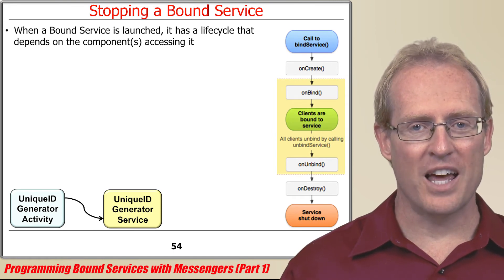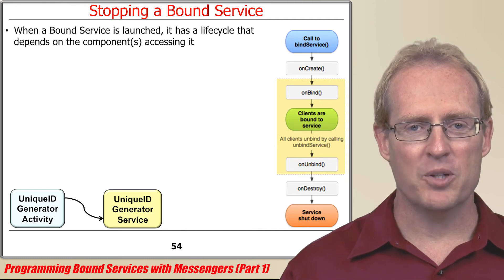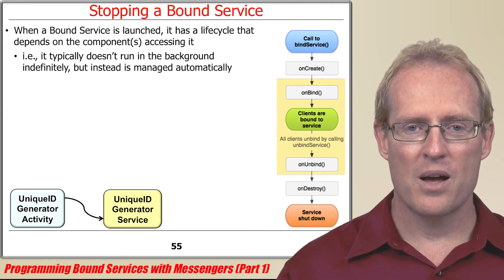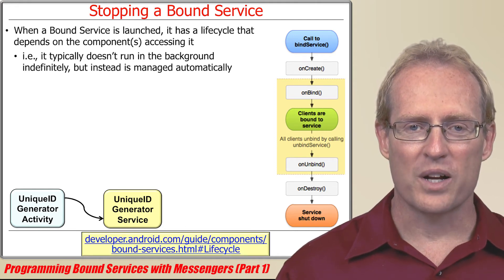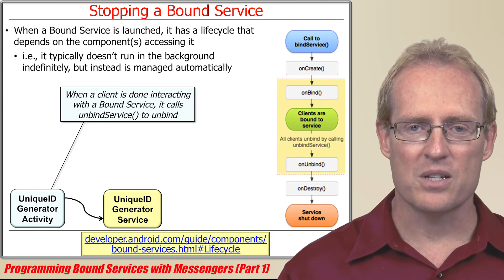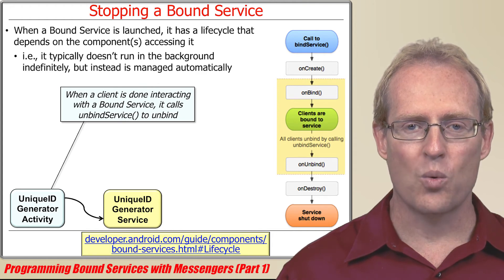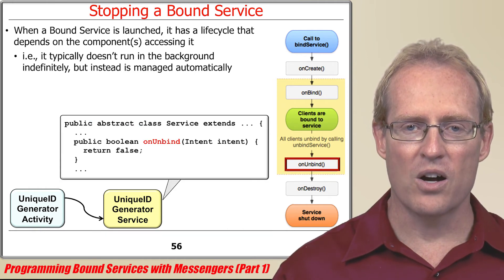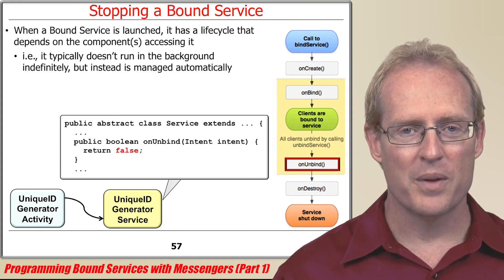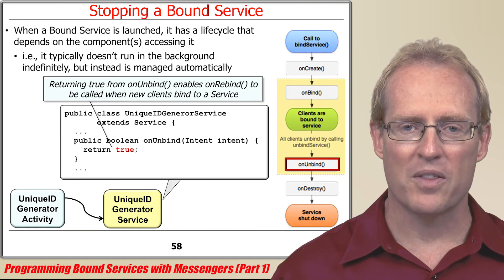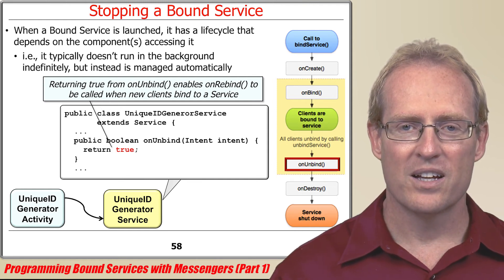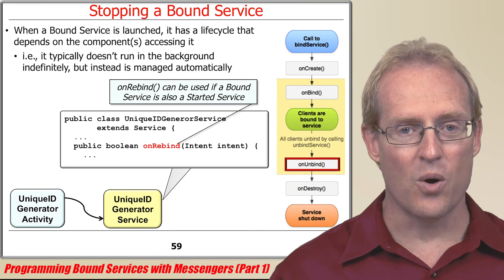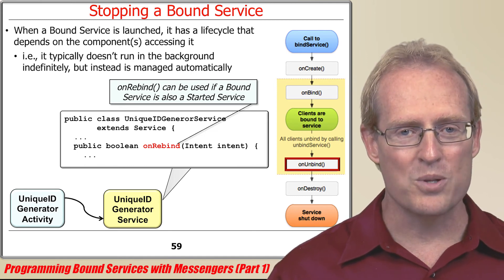When a bound service is launched, its lifecycle typically depends on the components accessing it. A bound service usually doesn't run in the background indefinitely, but instead is managed automatically by the Android service framework based on whether it's bound to any clients. When a client is done interacting with a bound service, it calls unbind service, which informs the Android service framework that the client no longer wants to receive calls if the service is restarted. When all clients have unbound, the framework calls the onUnbind hook method, which returns false by default, but can be programmed to return true if onUnbind should be called later when new clients bind. This is used when a service continues running after all clients have unbound, which happens if a bound service is also a started service — an uncommon but supported use case.